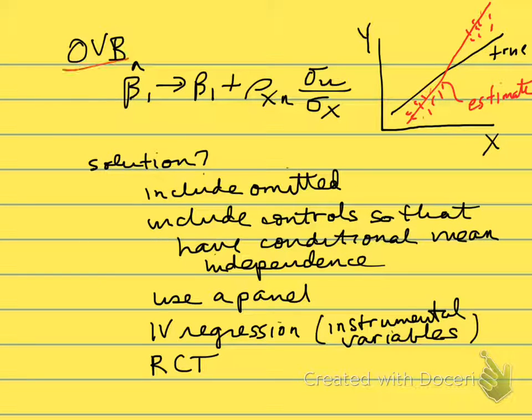Let's go with omitted variable bias. We remember from Chapter 6 in Stock and Watson, page 182, that we have a formula for thinking about omitted variable bias. As the sample size gets large, so as we go to the probability limit, our expectation of the coefficient we estimate goes to the true coefficient β₁ plus the correlation between X and the error term times σᵤ/σₓ. This correlation really matters. If the error term and X are positively correlated, we're going to have a positive bias.